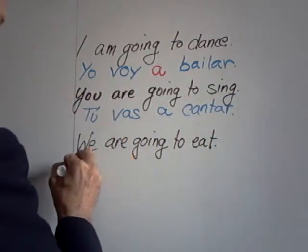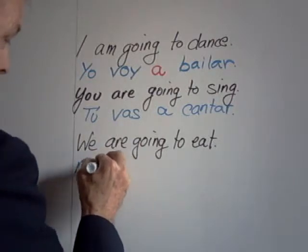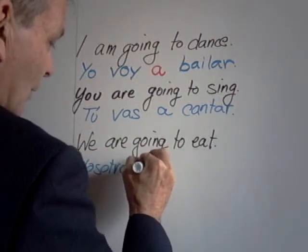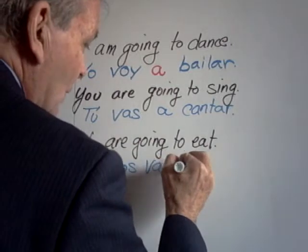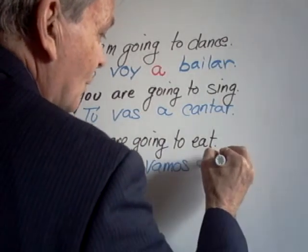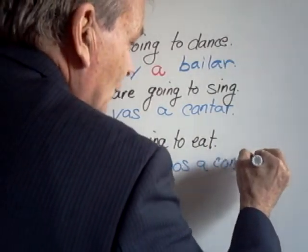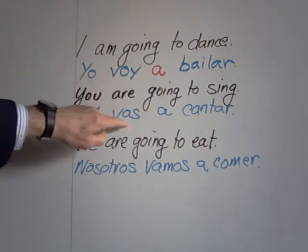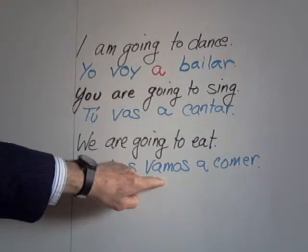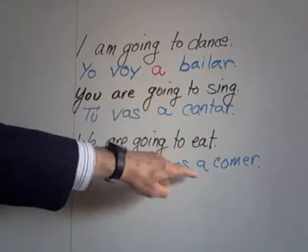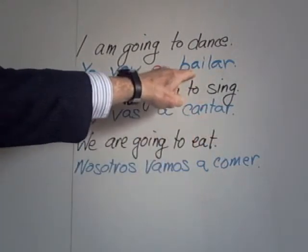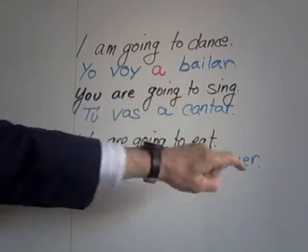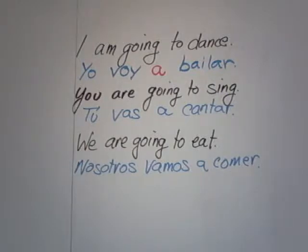We are going to eat: nosotros vamos a comer. So you can see that although we're not really talking about the future tense, we can talk about plans we're going to do just by using the form of the verb IR to go, with the little word 'a' followed by the unconjugated infinitive form of the verb.